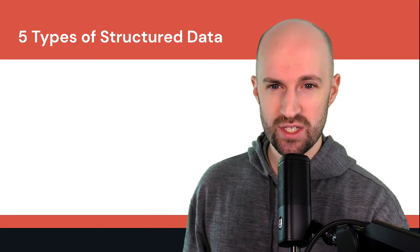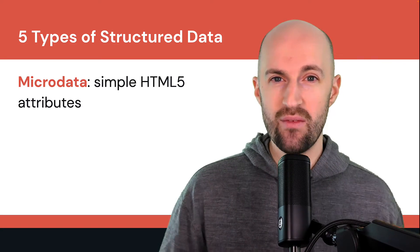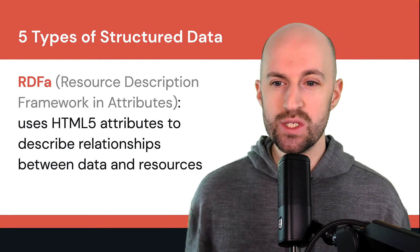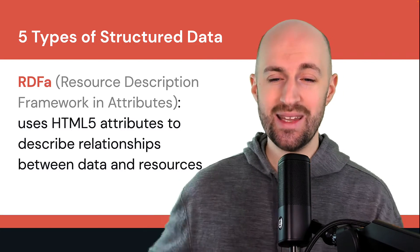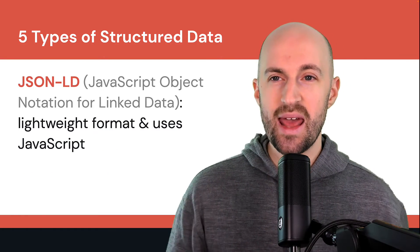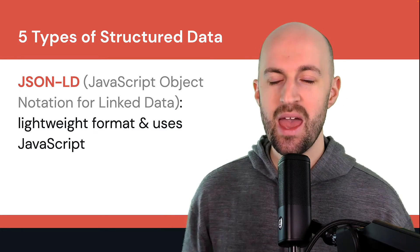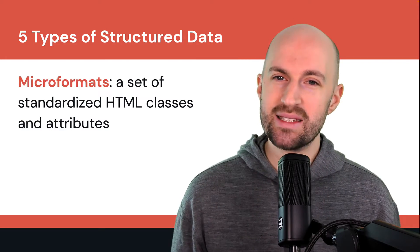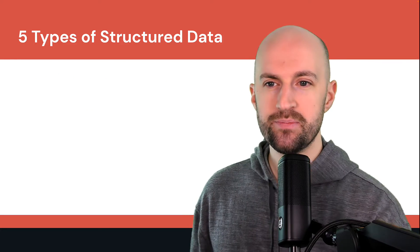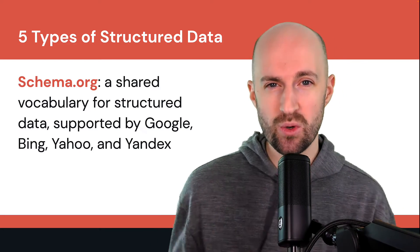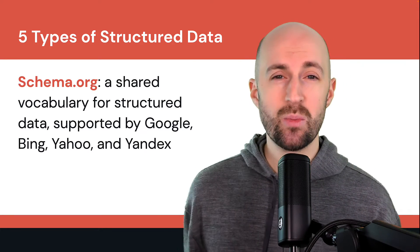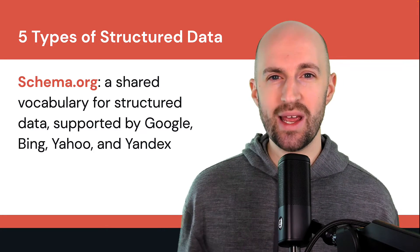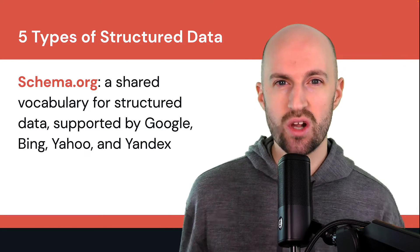So let's talk about the five types of structured data. The first one is microdata — basically simple HTML5 attributes that you can use. Next one is RDFa, also known as Resource Description Framework in Attributes, and it uses HTML5 attributes to describe the relationships between the data and the resources. Next is JSON-LD, short for JavaScript Object Notation for Linked Data, and this is a lightweight format of structured data that uses JavaScript. Then we have microformats, a set of standardized HTML classes and attributes. And finally, we have schema.org — this is the one you'd most likely use, and it's a shared vocabulary for structured data supported by the major search engines like Google, Bing, Yahoo, and Yandex. They basically all collaborated together to create this dictionary of entities that anyone can access and structure their data with.